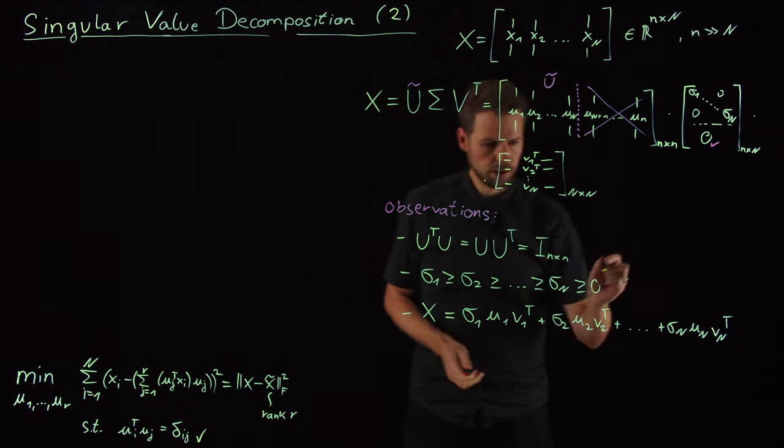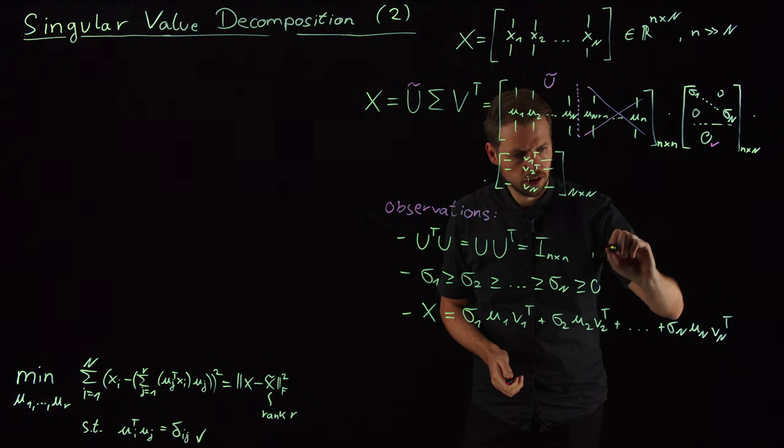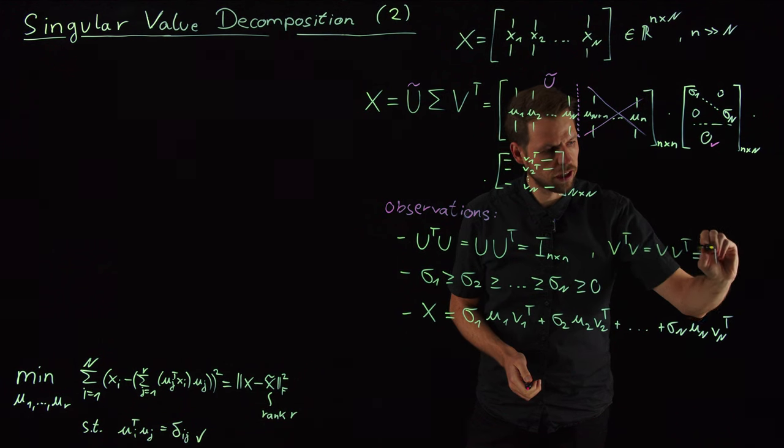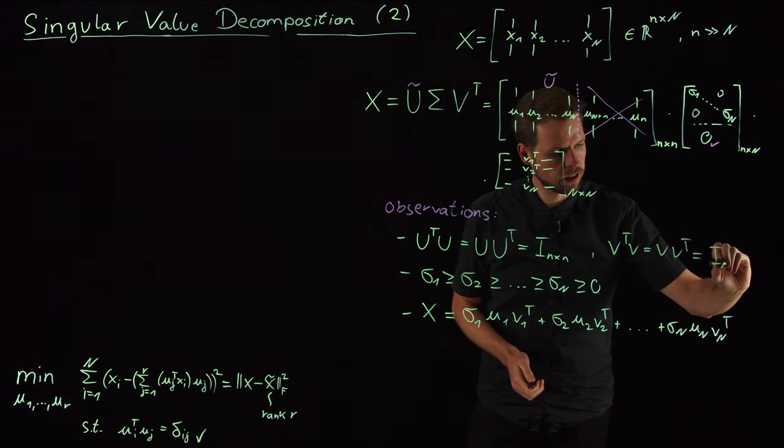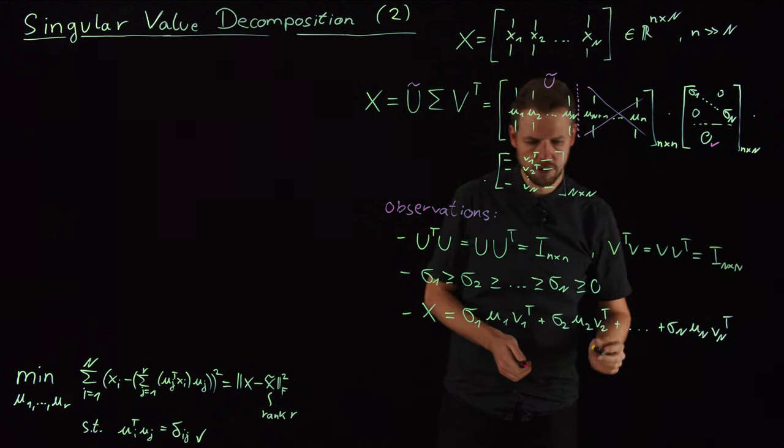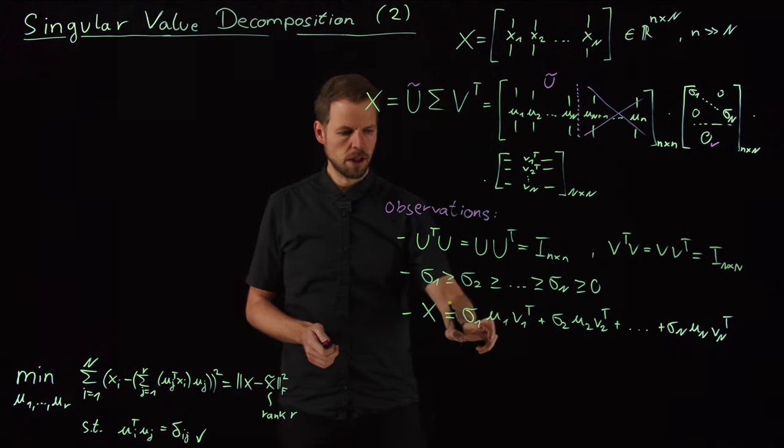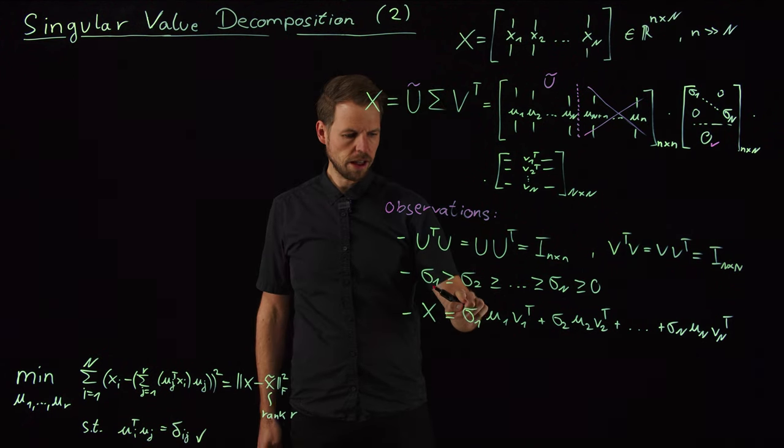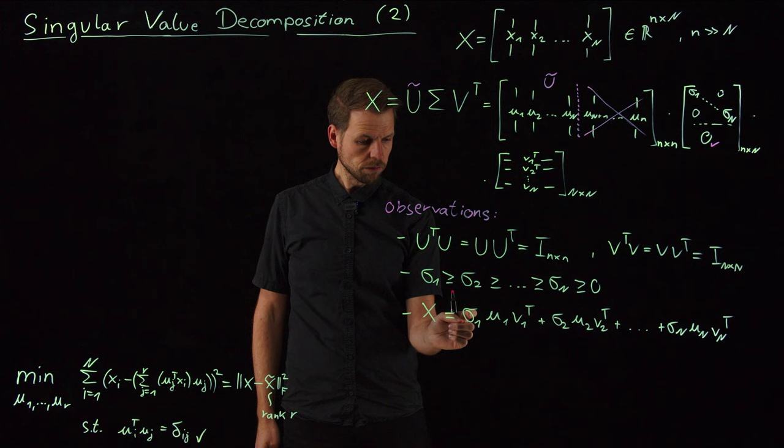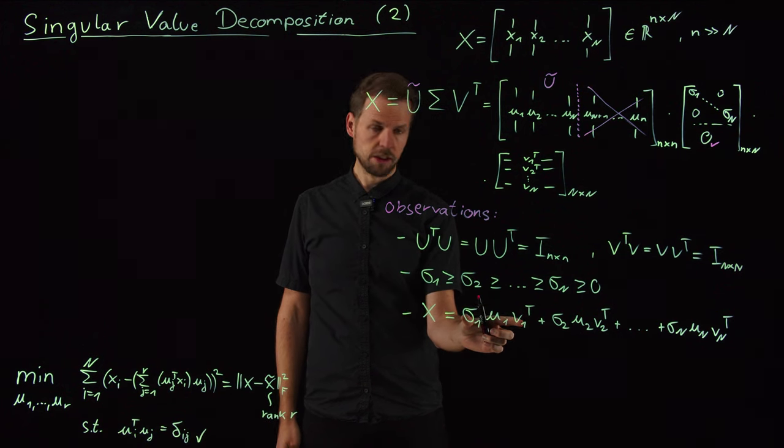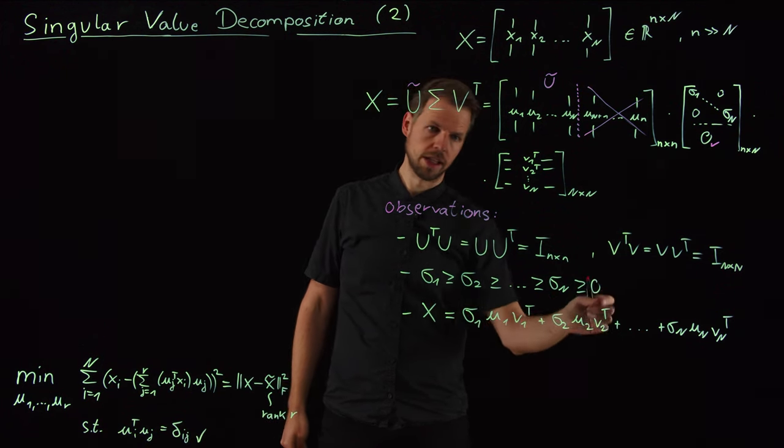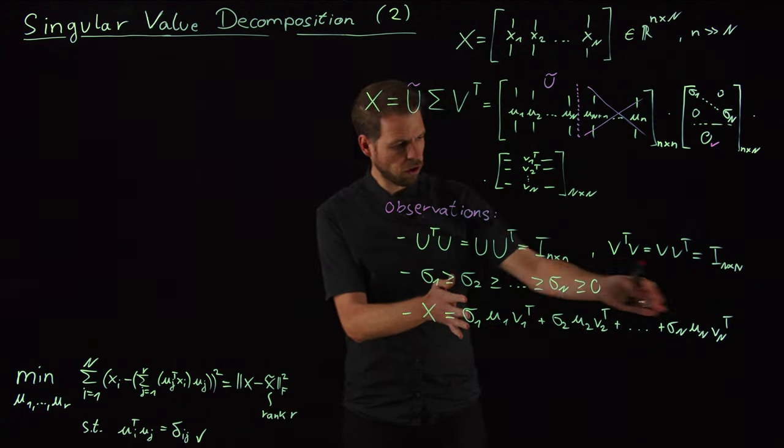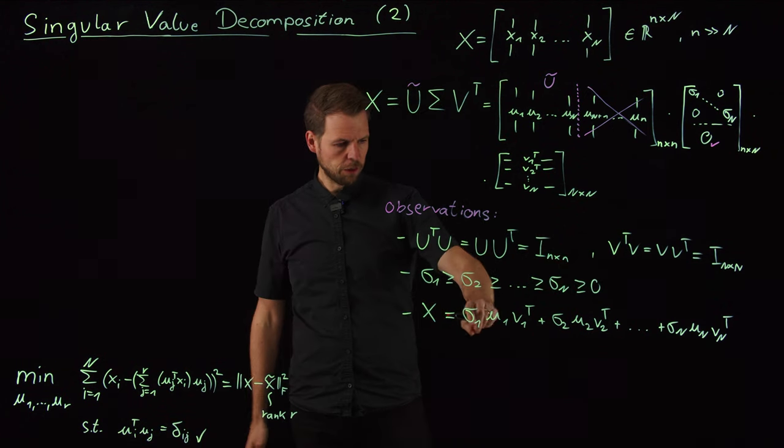So this is just component by component writing out the expansion. And this is really, really interesting here. What we see is that we have a series expansion, n terms. And they are sorted because they have this sorting in the singular values. And what we have seen is that U has unit length. Oh, by the way, the same holds for the V. So I have V transpose V equal to V, V transpose is also a unit matrix in dimension n by n. So unit length of U, unit length of V.